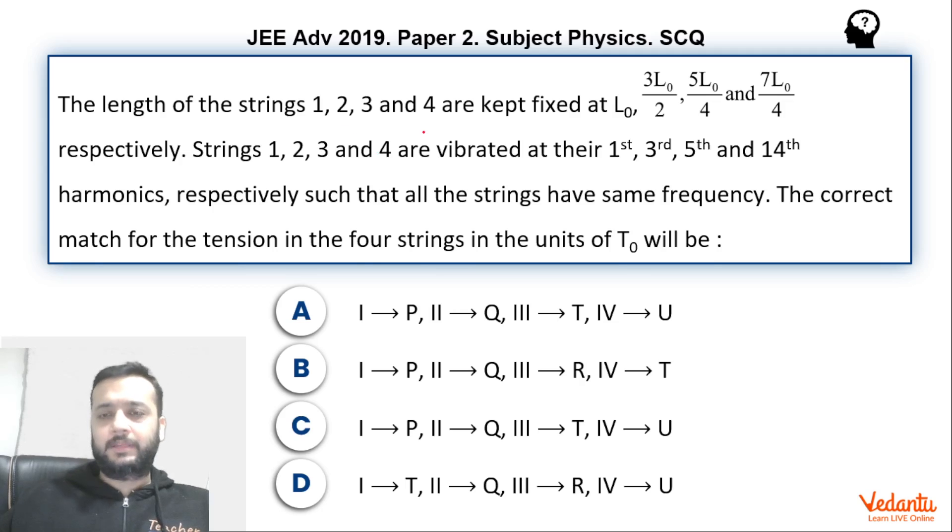The first string has length L0, second has 3L0 by 2, third has 5L0 by 4, and fourth has 7L0 by 4. These strings are respectively vibrated in 1st, 3rd, 5th, and 14th harmonics such that they have the same frequency.